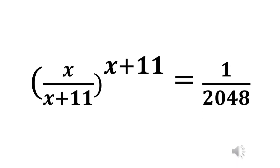Good day, my wonderful friends. We are here once again for mathematics olympiad class. We shall consider our last exercise. The question is: x over (x plus 11), all raised to the power (x plus 11), equals 1 over 2048. We are to find the value of x.